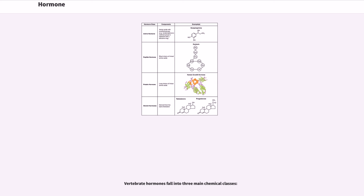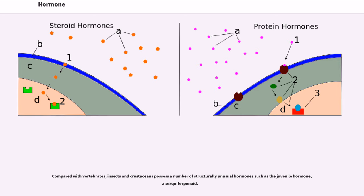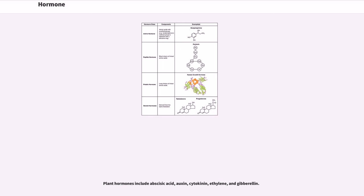Vertebrate hormones fall into three main chemical classes. Compared with vertebrates, insects and crustaceans possess a number of structurally unusual hormones such as the juvenile hormone, a sesquiterpinoid. Plant hormones include abscisic acid, auxin, cytokinin, ethylene, and gibberellin.